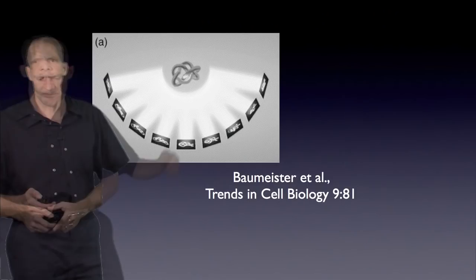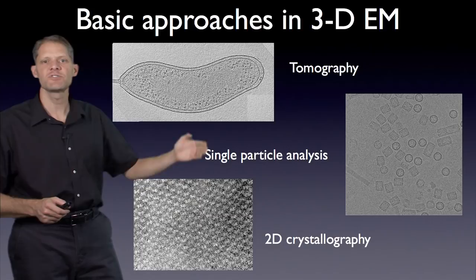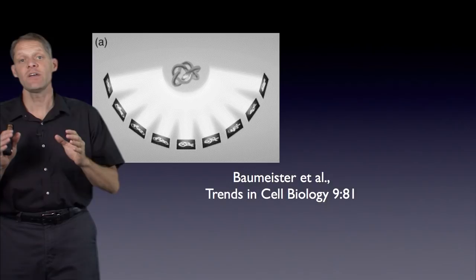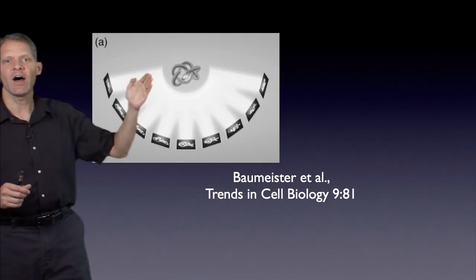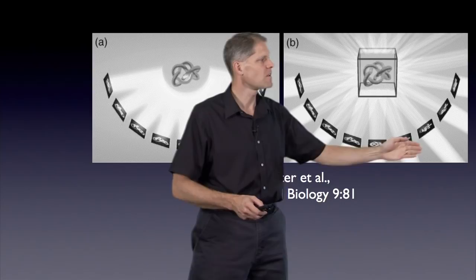The idea of tomography is that if you have a single unique object and you record projection images from lots of different directions, you can then take this set of projection images and calculate what the structure of the object must have been in 3D to give rise to all those different projections.